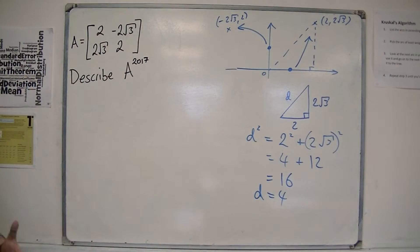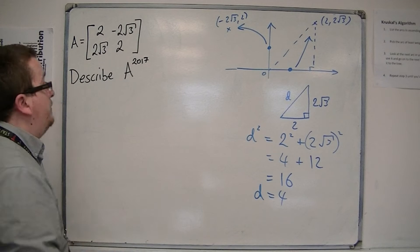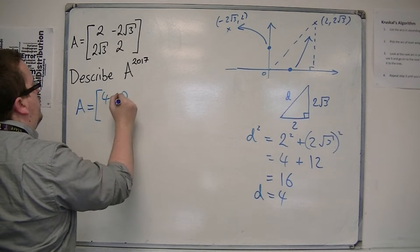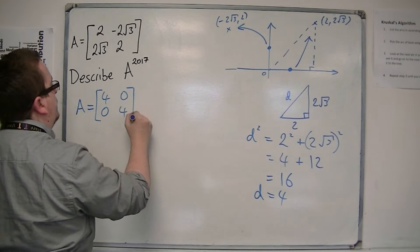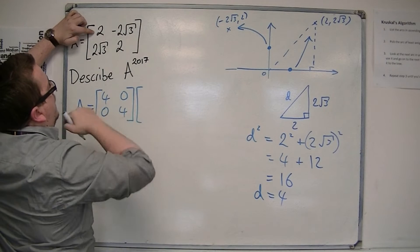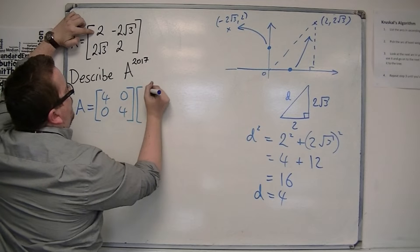And so, if d is 4, that means that we have an enlargement by scale factor 4. So we can now write A as 4, 0, 0, 4, times a matrix where each element has been divided through by 4,